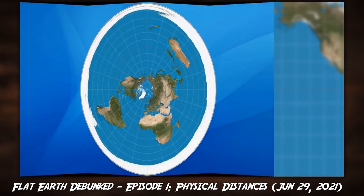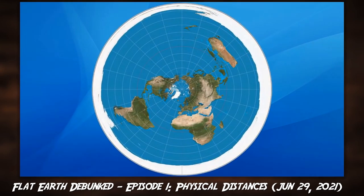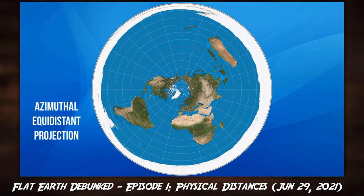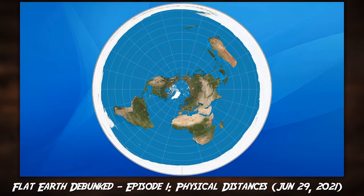As for our flat Earth on a flat map, we'll be using the azimuthal equidistant projection, which, when used as a projection, displays accurate distances of landmasses from the center.